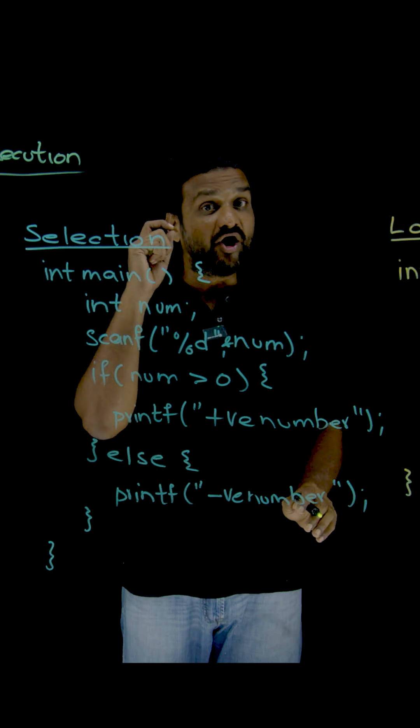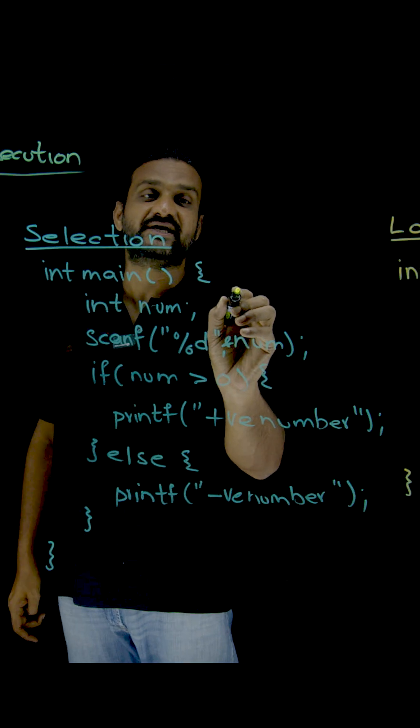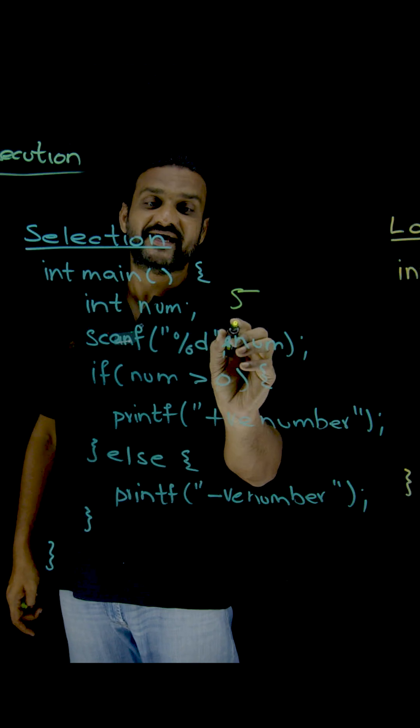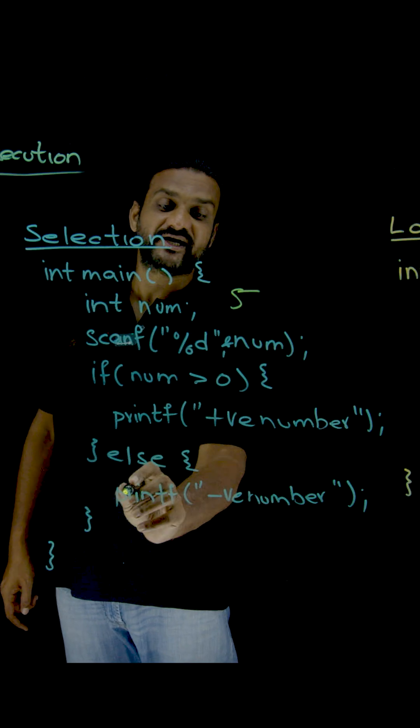All you need to understand is, in some cases, for example, if you give the number as five, it happens to be true. So this part will get executed and the else part will not get executed.